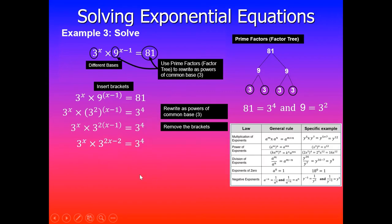So once I've removed the brackets, then we will need to simplify by using laws of indices. In this case, the bases are the same and we are multiplying. If the base is the same and we multiply, the rule says we add the powers. So this becomes x + 2x - 2, which gives you 3x - 2, equal to 3^4.